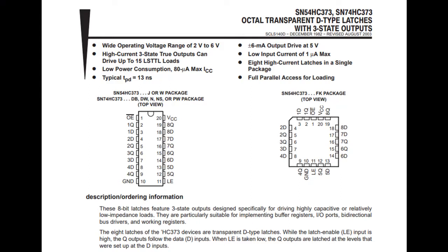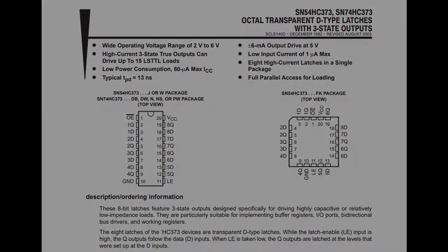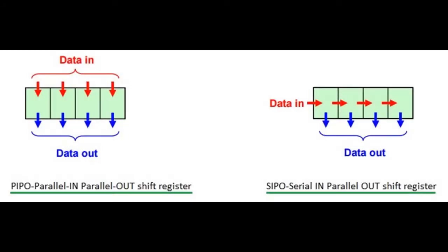PIPO registers work like this one on the left, but there exists a different kind of register like the one on the right that allows us to set the bit values in our register one at a time, and those are called SIPO serial-in parallel-out shift registers.